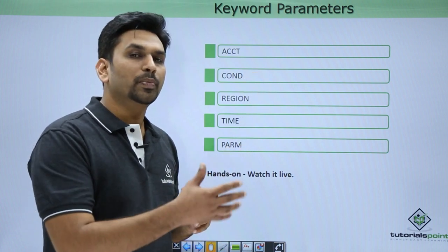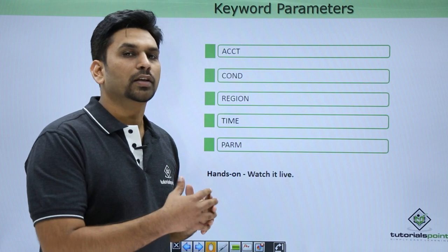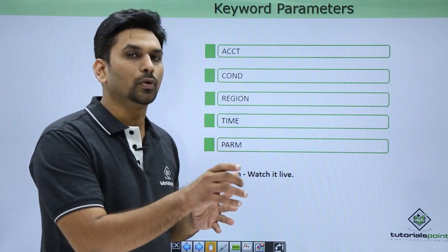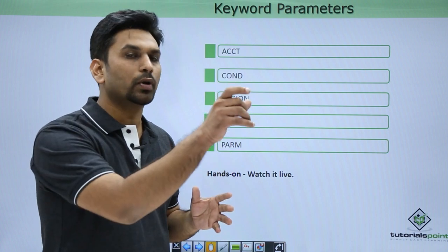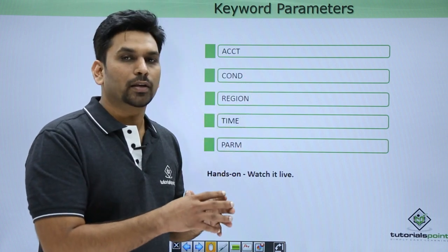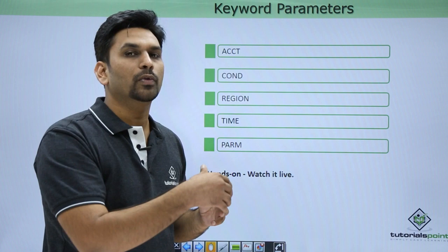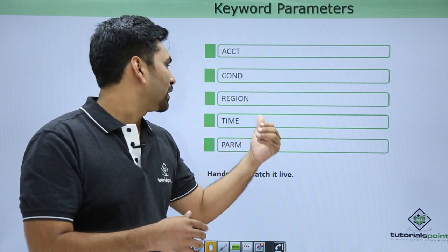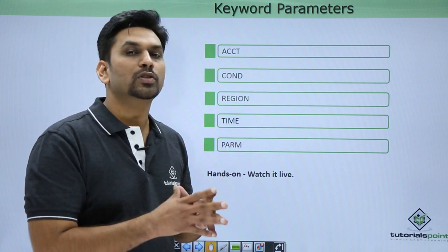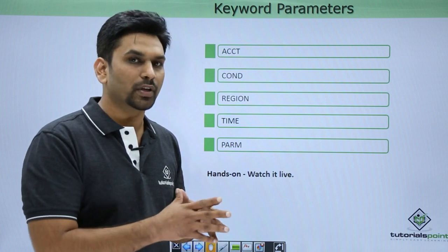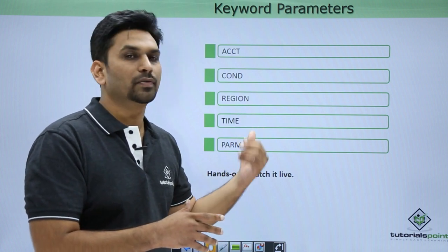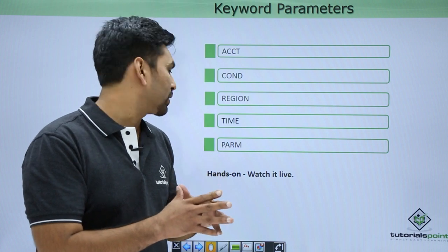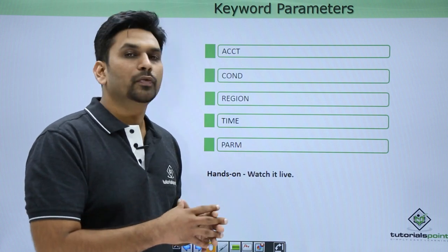CONDITION takes reference from the output of the previous steps. For example, if the previous step executed successfully and gave a return code of 0, we can check that return code and put a condition — like if the condition is 0 then only this step will be executed. REGION specifies how much memory space should be given for that step to execute, and TIME specifies how much time should be allocated for that particular step.